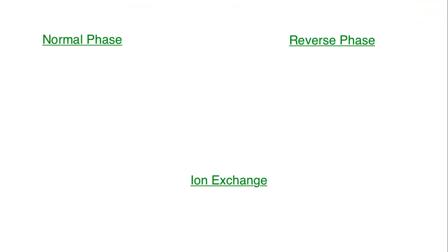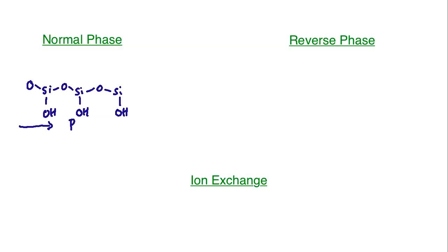Let's take a look at the structures. For normal phase, the backbone is basically repeating siloether groups, and then these groups have alcohols coming off of them. These alcohols are what your analytes, as they pass through the column, are going to interact with. This is very polar, so we would expect a strong interaction with other polar analytes. Things that are non-polar are going to get washed along the normal phase column with relative ease compared to the polar analytes.